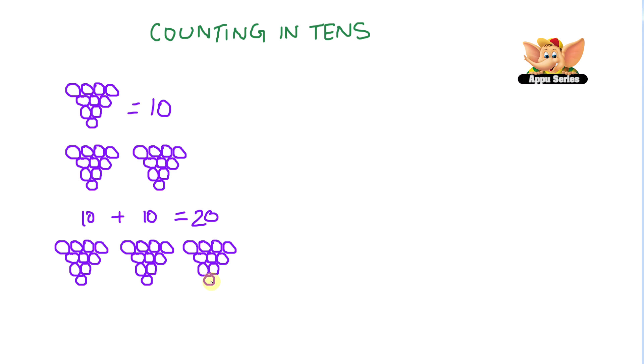Now how many do we have? We have forty grapes, right? Because we have four groups with ten grapes each. That's ten plus ten plus ten plus another ten equals forty.